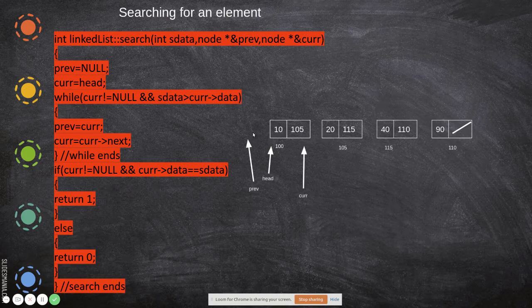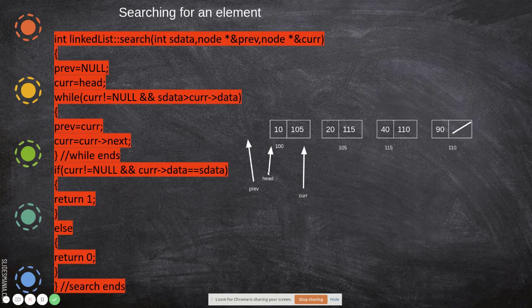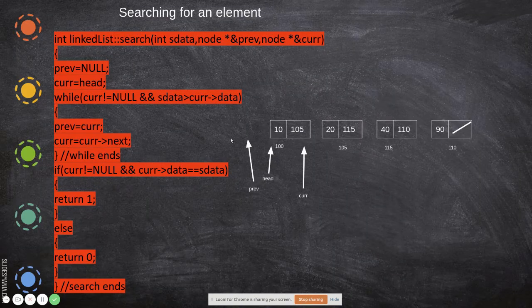We have two pointers and we will see the usage now. Initially, previous is made to point to null, and current is made to point to head. Imagine this is the linked list: the data values are 10, 20, 40, and 90, and each node's next field holds the address of the next node. Other than the head pointer, we have two more pointers — previous and current. Current is made to point to the first node (the head node) and previous, as the name indicates, is made to point to null.